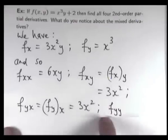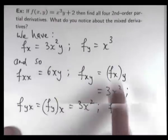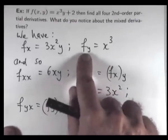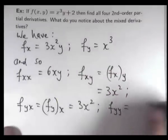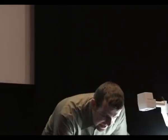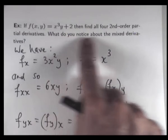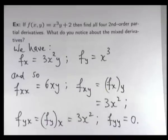And finally, f sub y sub y, go up to here, differentiate partially with respect to y. So that's going to give us 0. Okay, so we've quickly calculated the four second-order partial derivatives.